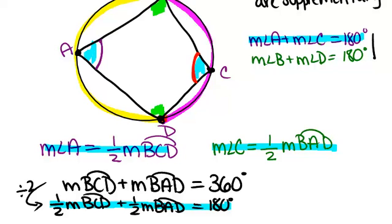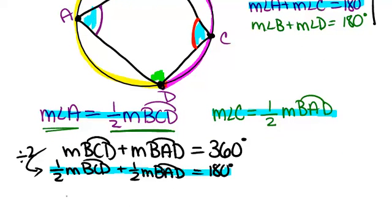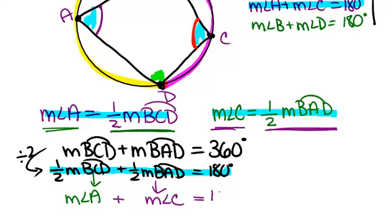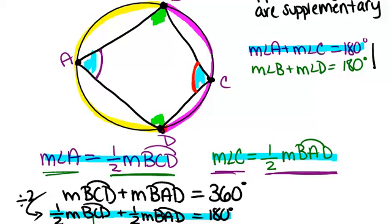Since the measure of arc BCD, one-half of that is the measure of angle A, we can substitute in the measure of angle A right here. And similarly, since one-half the measure of BAD is just the measure of angle C, we can substitute in the measure of angle C right here. So we have measure of angle A plus the measure of angle C equals 180 degrees, which is exactly what we said up here.